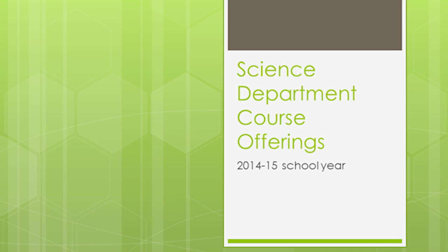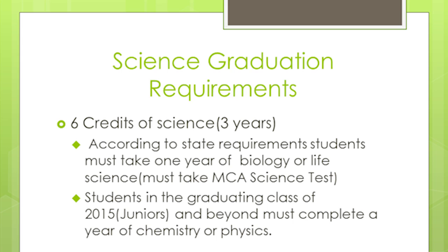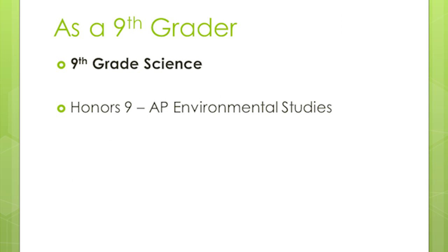As far as science graduation requirements: you need six credits of science — that's three years — to graduate. Also, you must take the MCA science test in biology, so all students are required to take biology or life science to graduate. Another new requirement is that all students graduating in the class of 2015 and beyond must also take a class in chemistry or physics. As a ninth grader, you took either ninth grade science or honors nine, which is AP environmental studies.